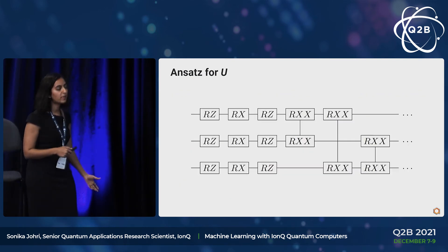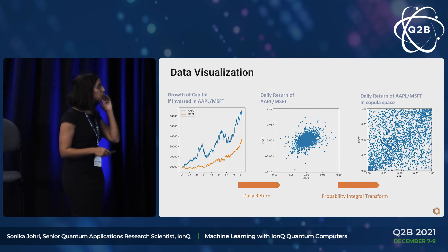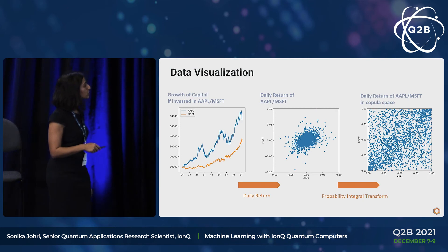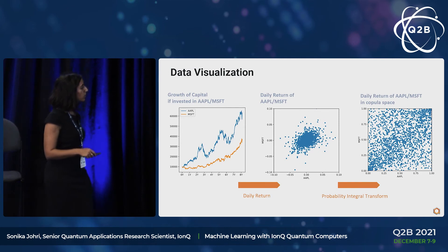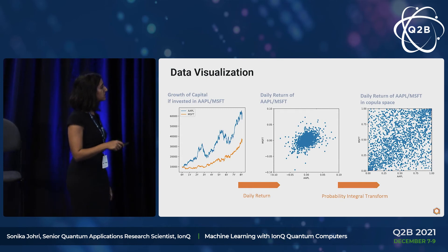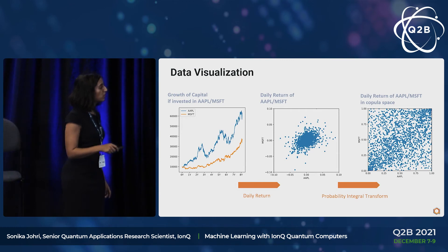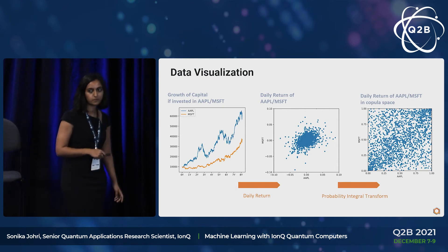With all that theoretical background in place, we applied it to a real dataset. The first figure shows the growth of capital invested in Apple or Microsoft stocks, and the returns are presented as a scatter plot. The probability integral transform takes you from that scatter plot in real space to copula space. What you want your quantum machine learning algorithm to do is produce samples that look like they are from that probability distribution.